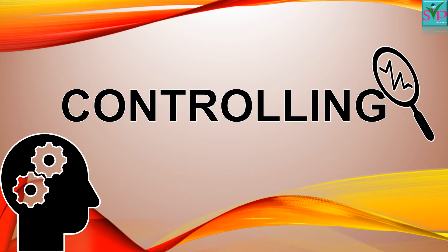What is the meaning of controlling? In simple words, to control or to handle something. In the organization, the manager exercises control over all activities of the business organization with proper planning to get the desired result.